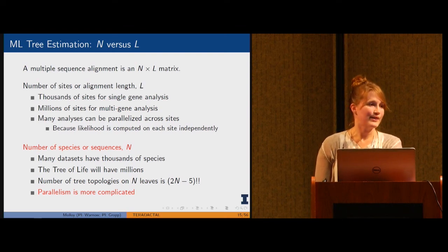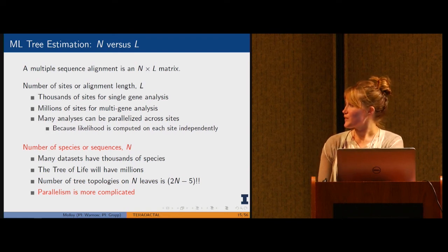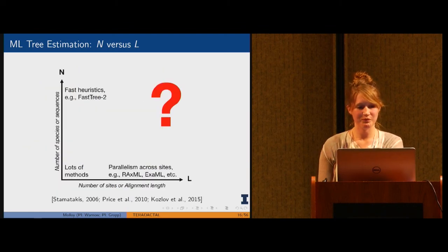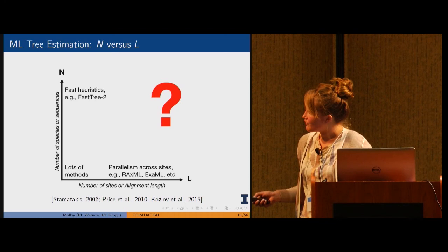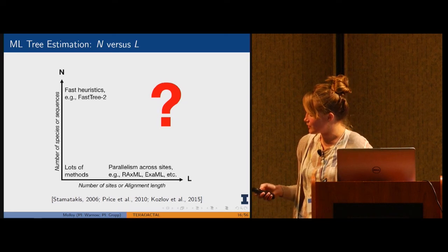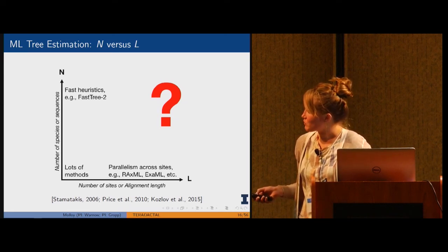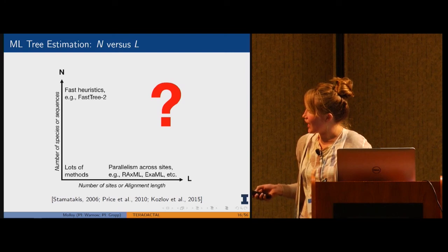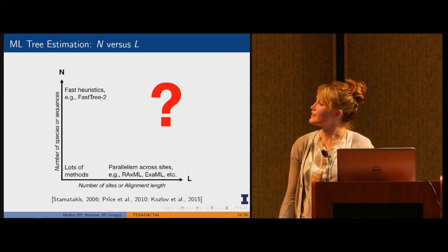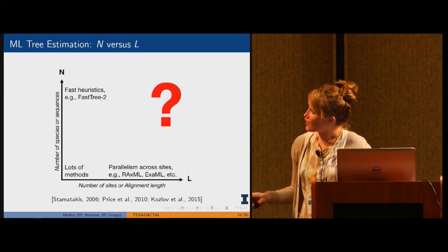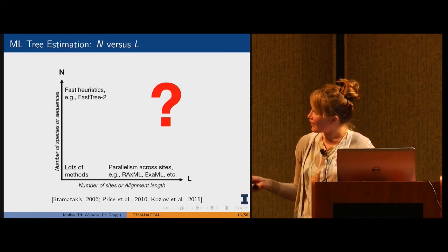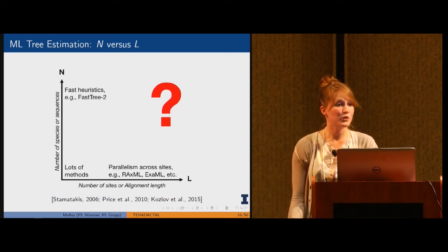To make matters worse, the number of tree topologies is going to increase exponentially with the number of leaves. If we have a very small l and small n, there's a lot of different methods we can use. If we have a reasonable n and very large l, there's methods like RAxML and ExaML that have parallelism across the sites. If you have large n and not too bad of l, there's some fast heuristic methods. This space where n and l are large is the space that we want to target and use Blue Waters to build evolutionary trees.